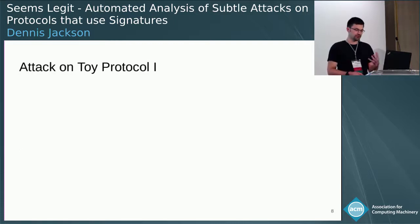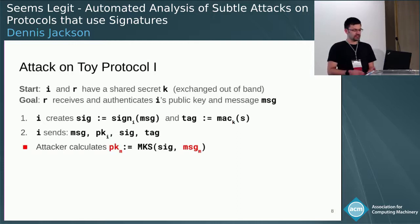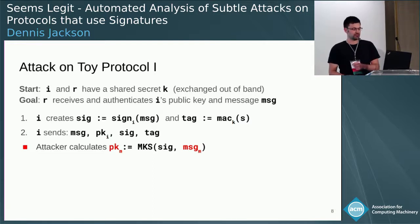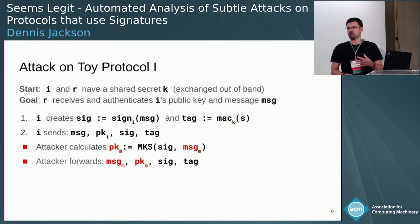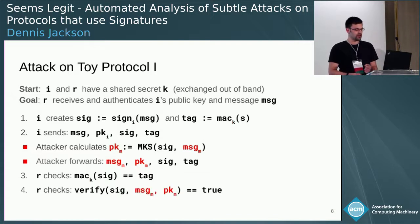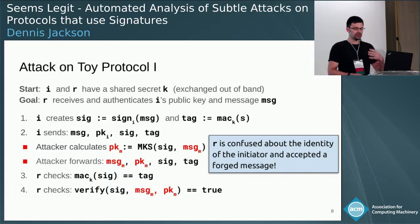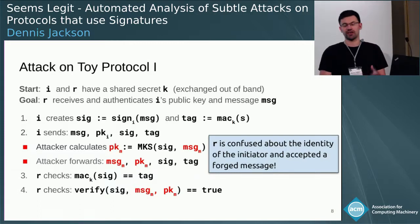Now we're going to attack that protocol using one of those subtle properties. The initiator sends out their message. Now the attacker is going to do a message-key substitution: they pick a different message of the attacker's choice, and produce a new public key such that the signature will verify for the attacker's message and public key. They replace the message and public key, and forward on the same signature and the same tag. When the responder checks the MAC, it's valid because nothing has changed about the signature or tag. When the responder verifies the signature, even though it was originally intended for a different message, it's going to verify under the attacker's message and public key. The responder has now been confused about the identity of the initiator and has accepted a message that wasn't sent by the original person they shared their secret with.